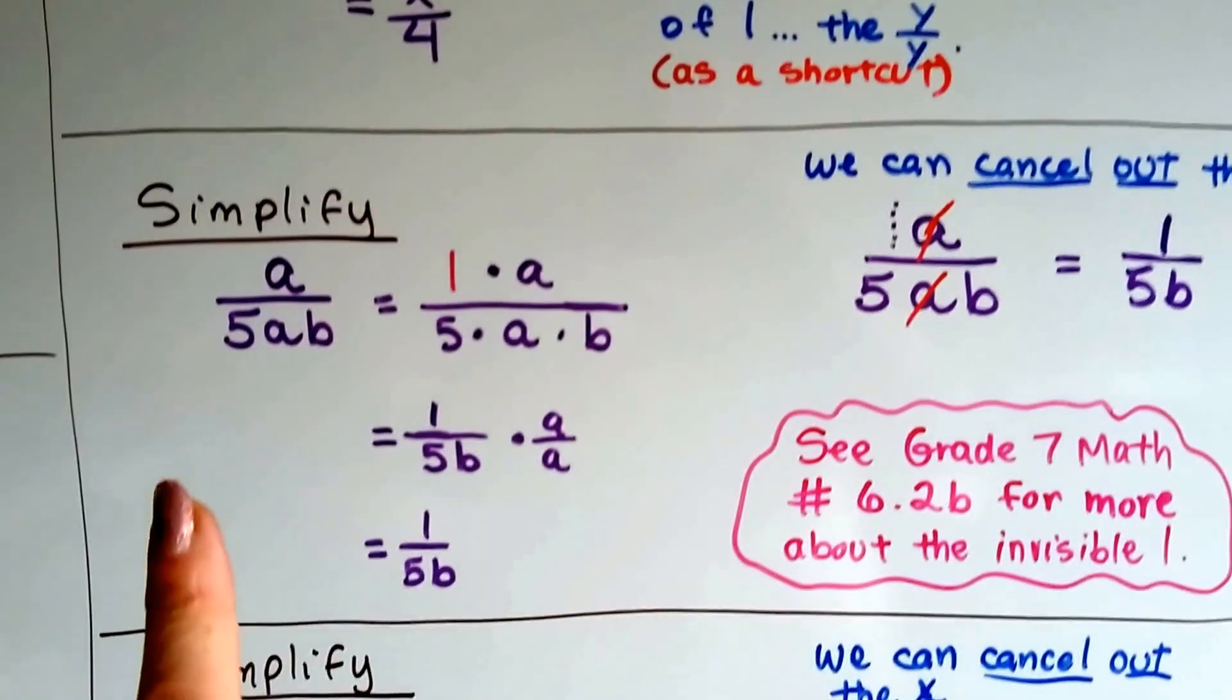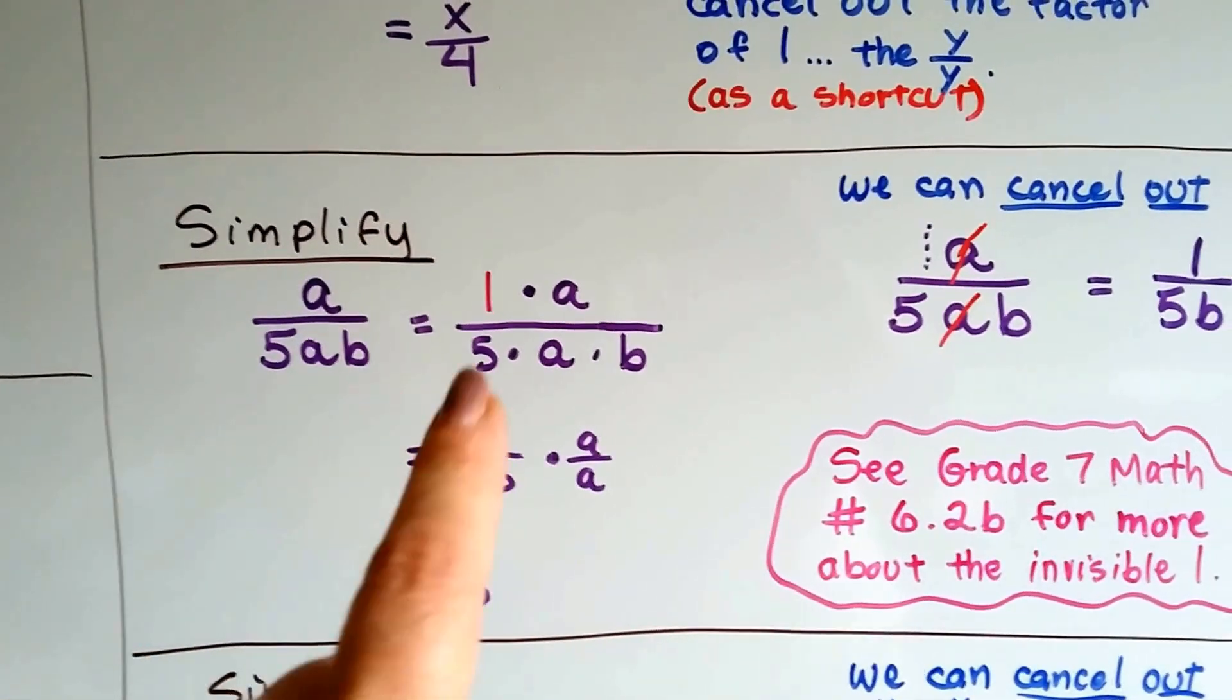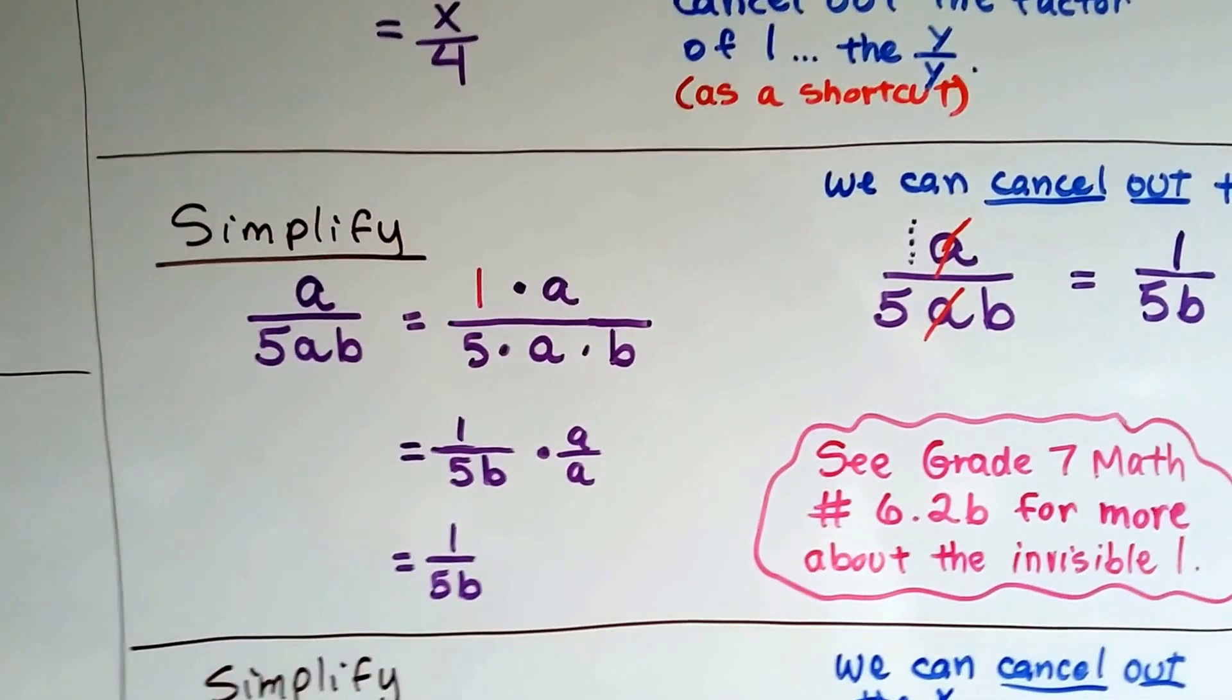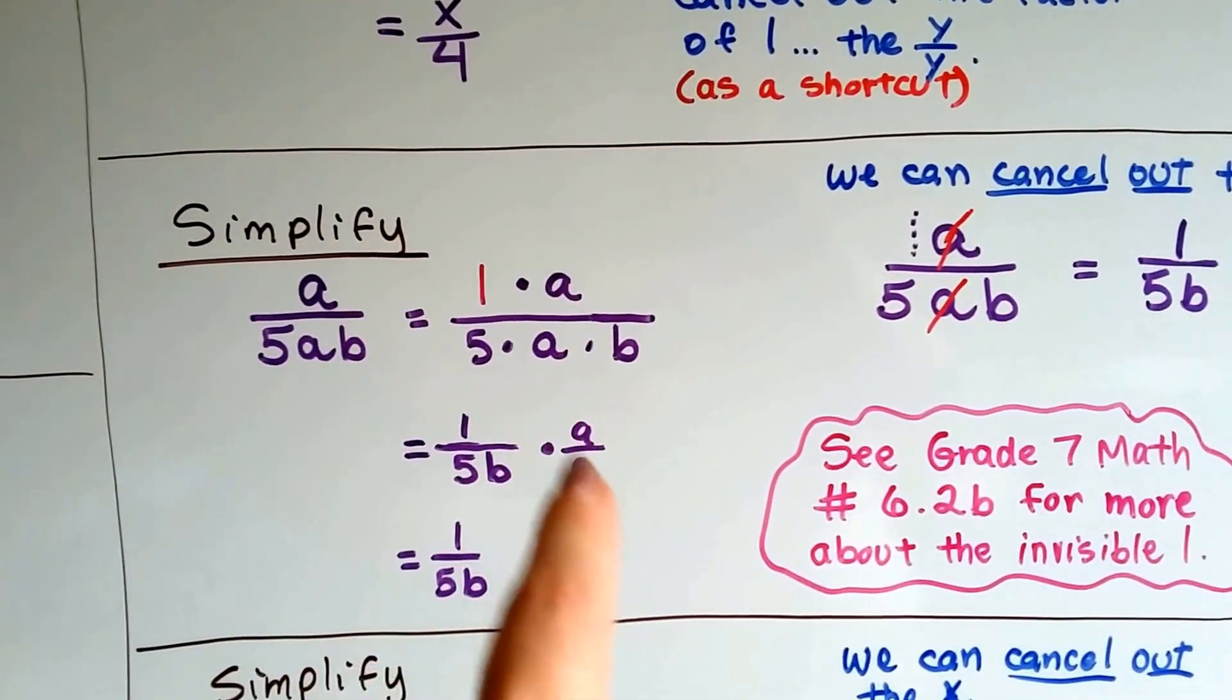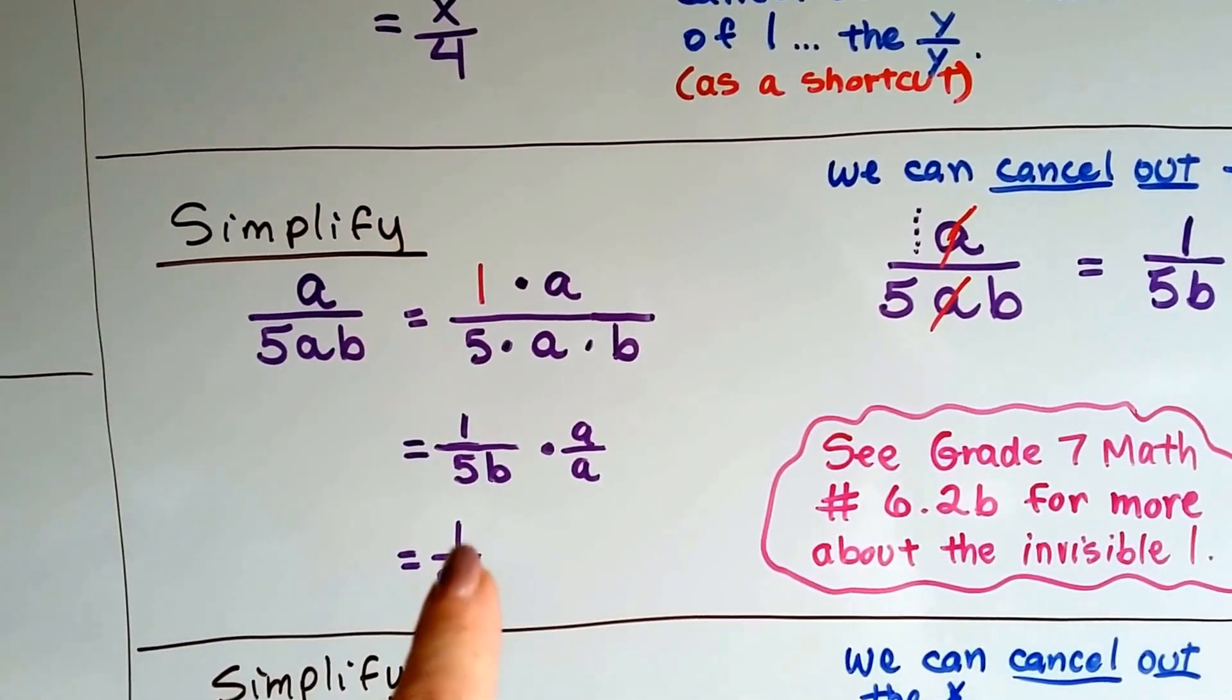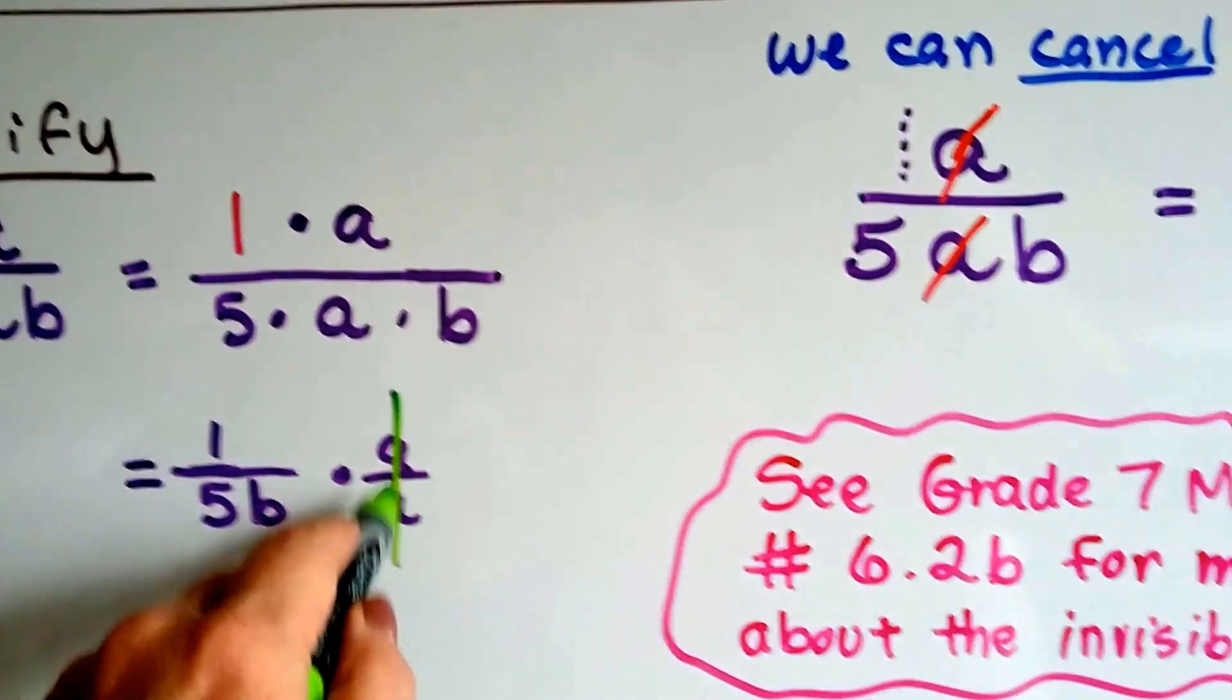So, this a over 5ab is like 1 times a over 5 times a times b. And we can pull this a over a out, and we're left with 1 over the 5 and the b. So, it's 1 over 5b. And this a over a cancels itself out.